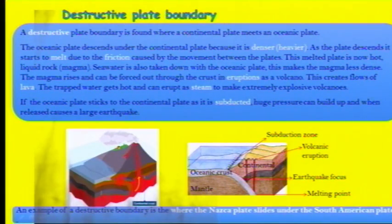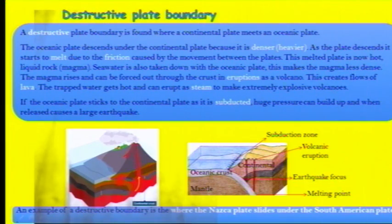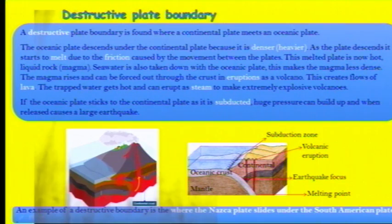The next one is destructive. This is where we get volcanoes and earthquakes happening, as well as at constructive boundaries. The oceanic, heavier, denser plate sinks beneath the continental, lighter plate. The oceanic plate has got ocean or sea on top of it and the continental plate will have land on top of it. Where they come together we have a subduction zone and we often get volcanoes erupting here as well, because there is a gap that enables the magma to escape.